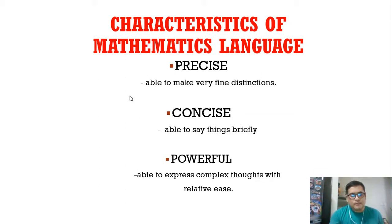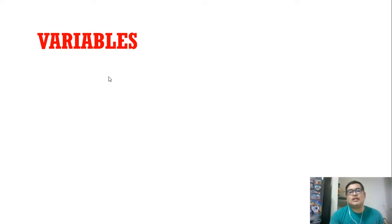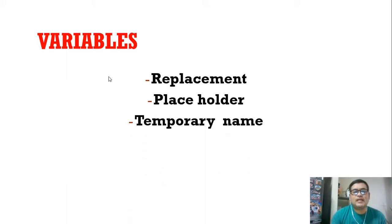We're also dealing with variables. We know in algebra, variables substitute or represent the unknown number. In mathematics, variables mean replacement, it also means placeholder, and also a temporary name for a particular unknown number.